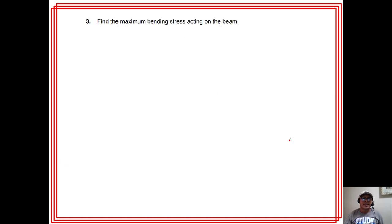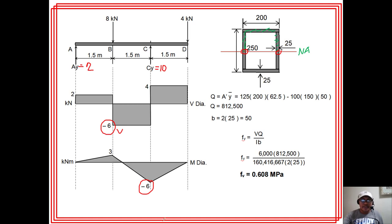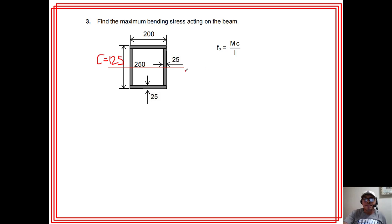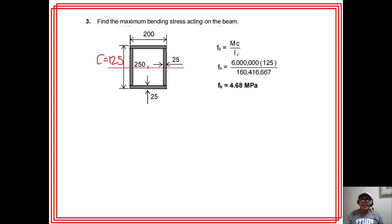For maximum bending stress (MC/I): maximum moment M = 6 kN·m. Since the beam is symmetrical, C = half of 250 = 125 mm (distance from neutral axis to outermost fiber). Using I from question 1, the maximum bending stress = 4.68 MPa. Units: Newton × millimeter / mm⁴ gives N/mm² = MPa.